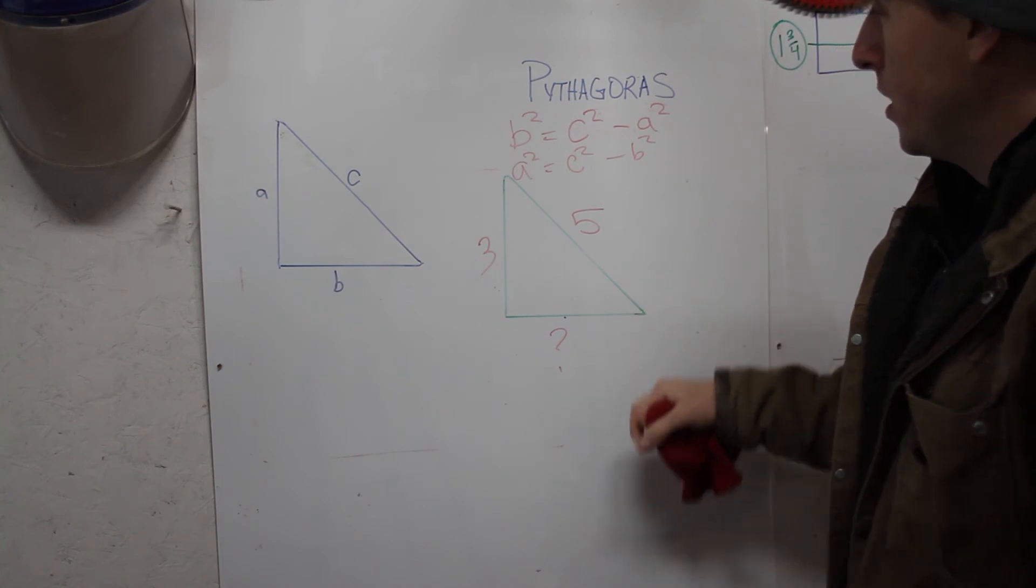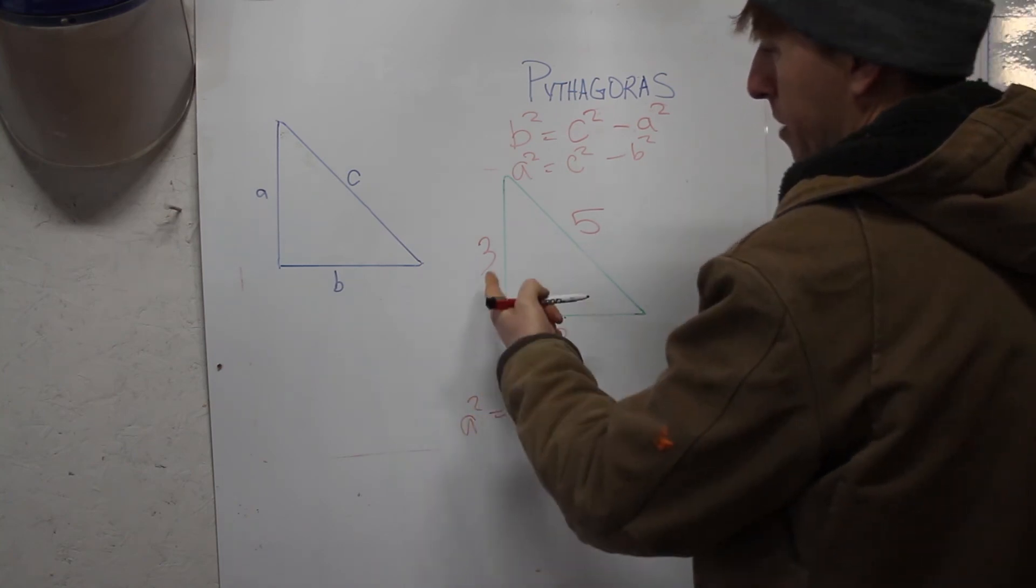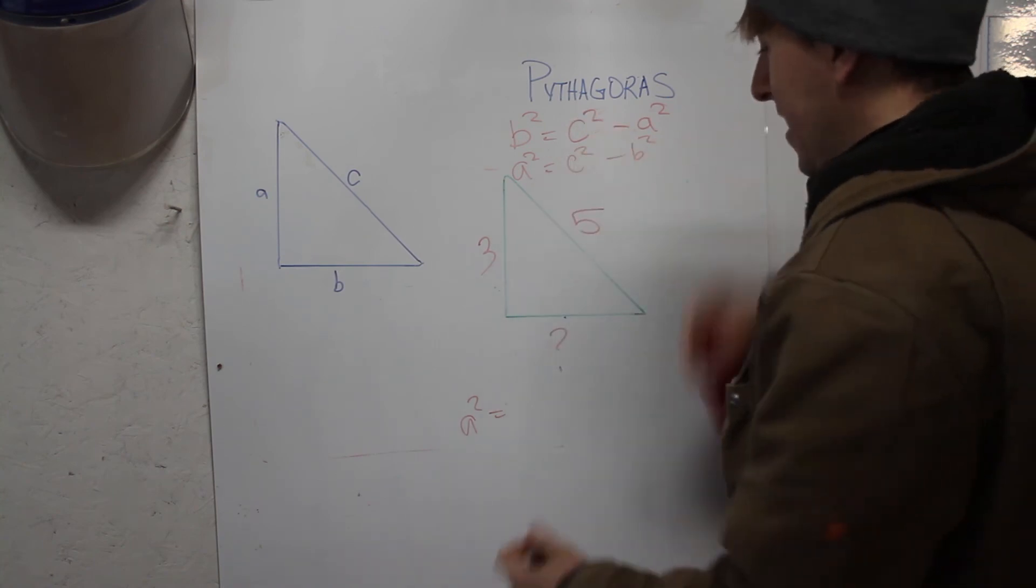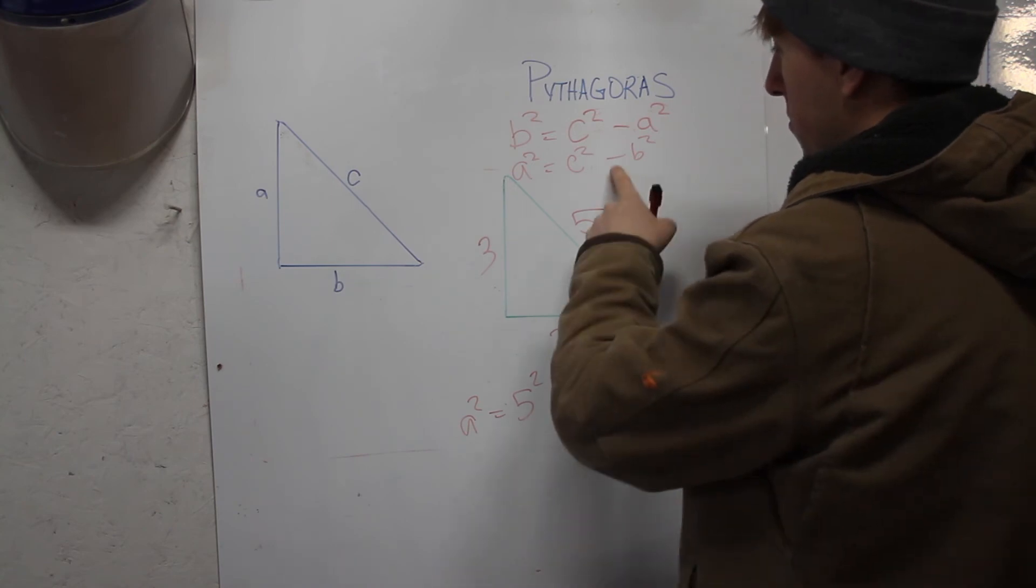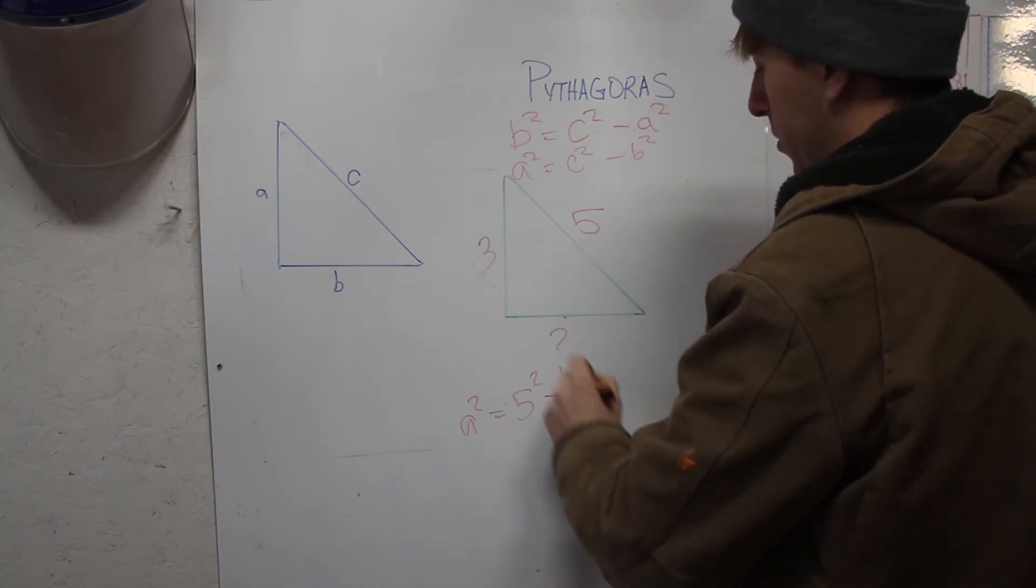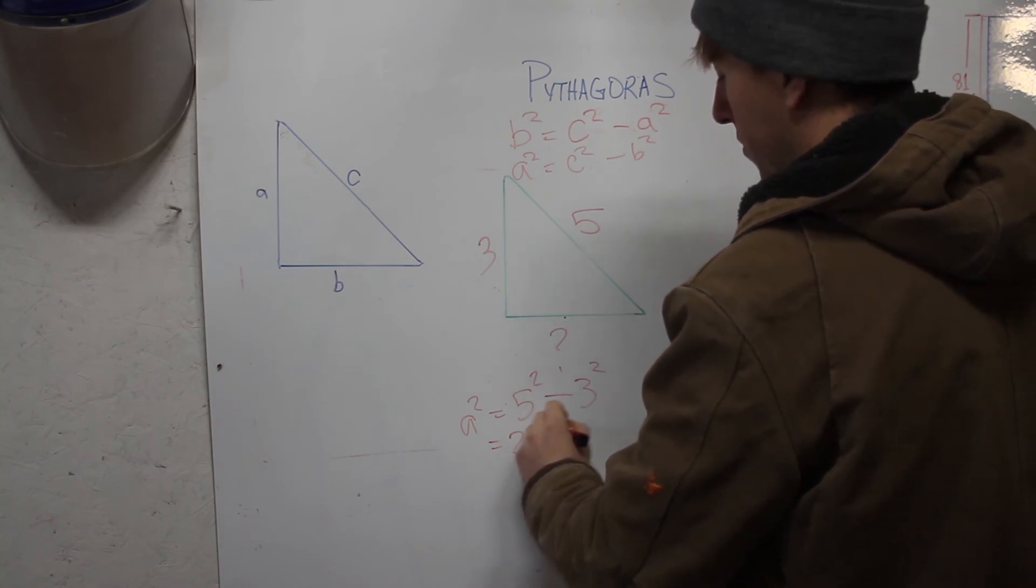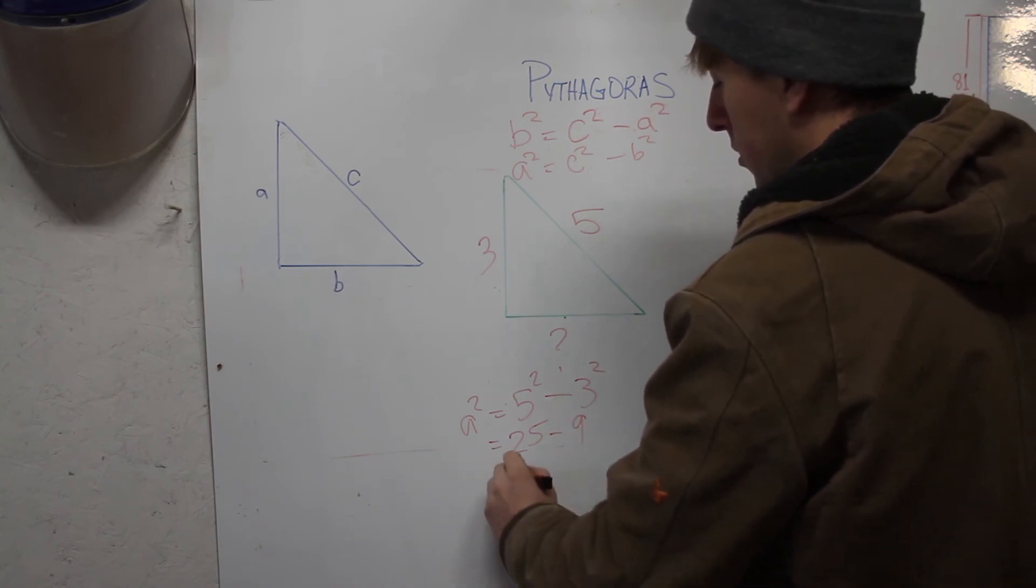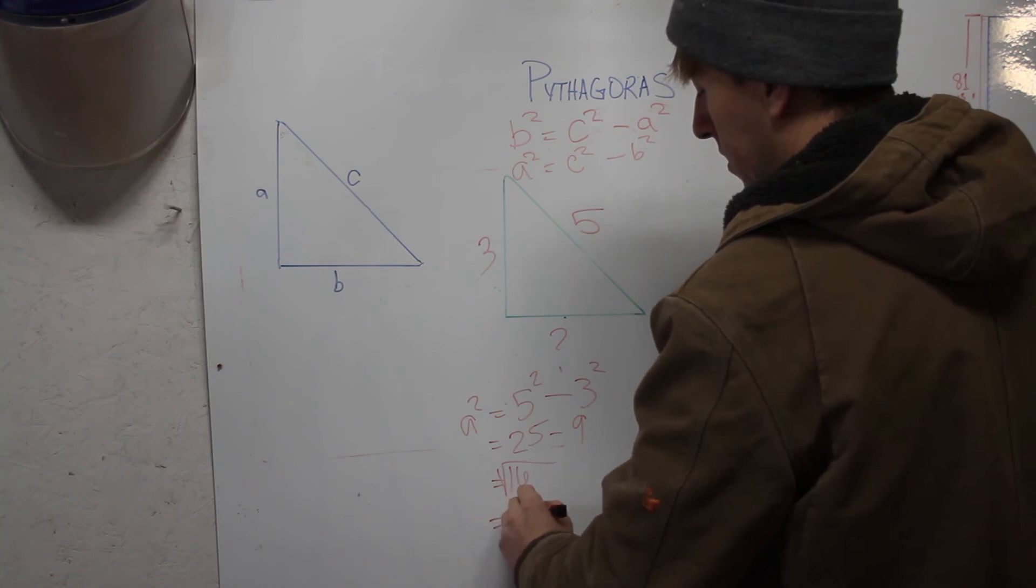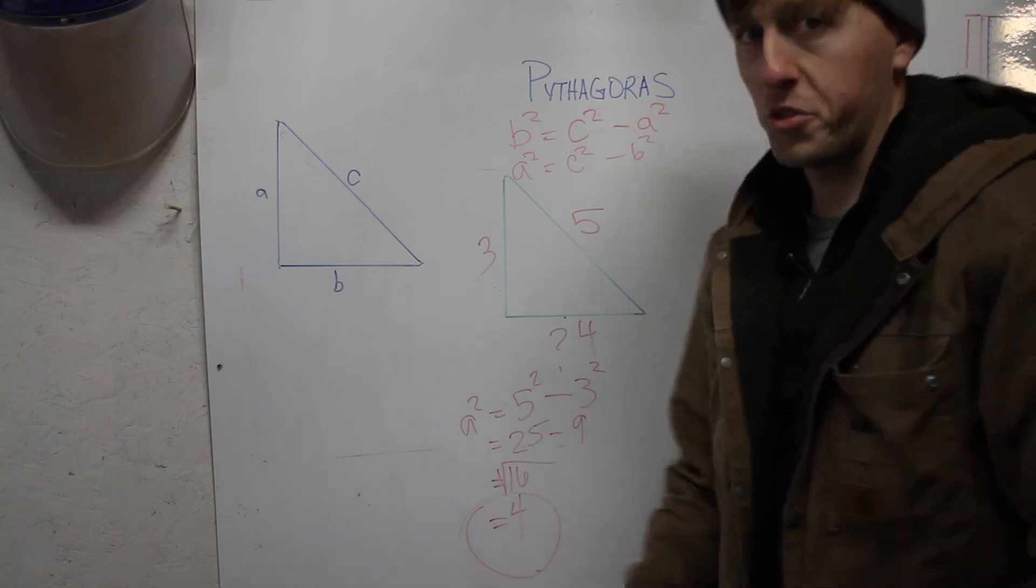So in this example we have our A squared which we don't know - I just imagine this is B is A, it's fine or whatever. 5 squared, which is our C, minus 3 squared. 5 times 5 is 25, minus 3 times 3 is 9. That's 16. The square root of 16 is 4. 3, 4, 5. Now you have your triangle.